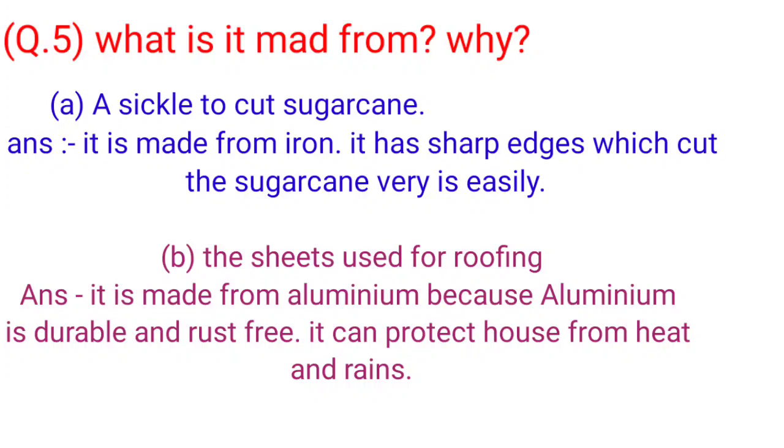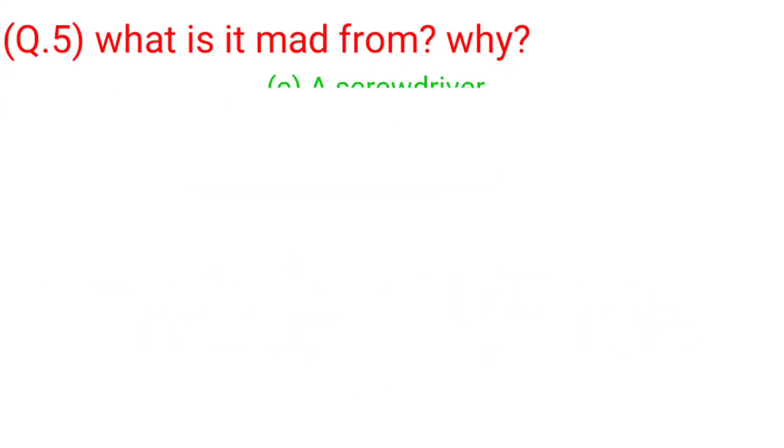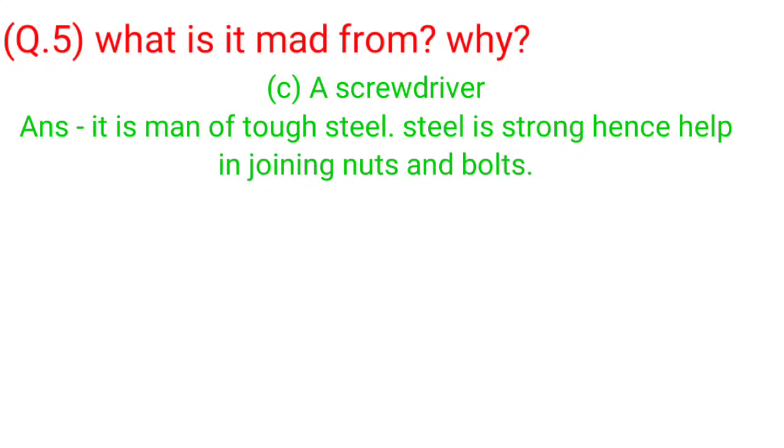B. The sheet used for roofing. Answer: It is made from aluminum because aluminum is durable and rust free. It can protect house from heat and rains.